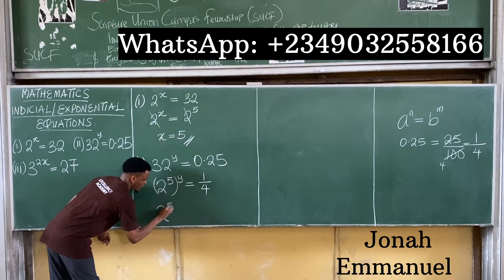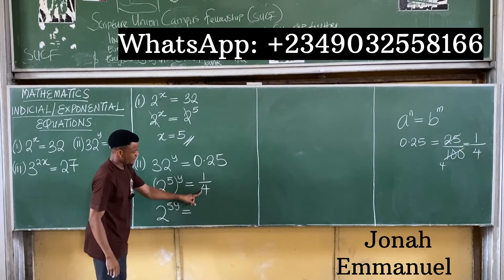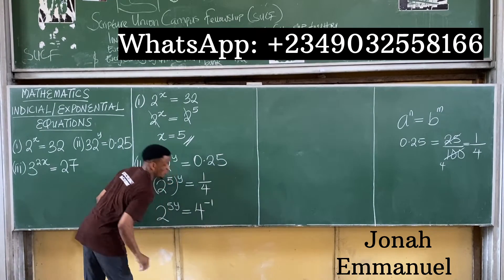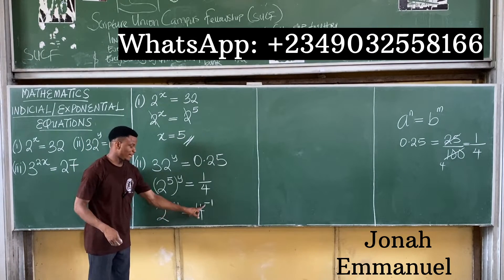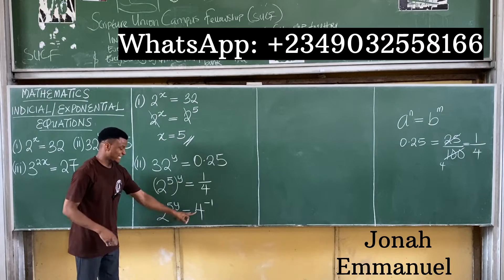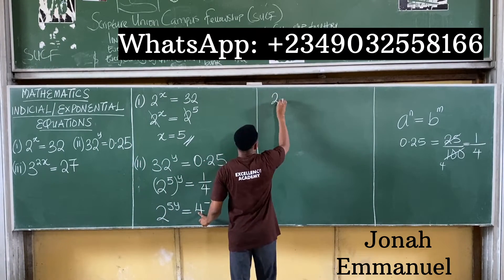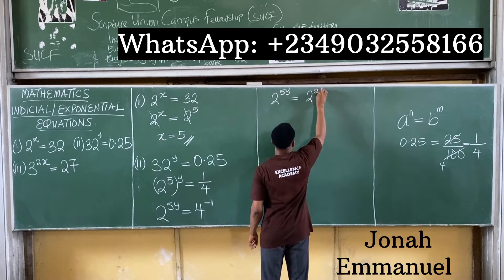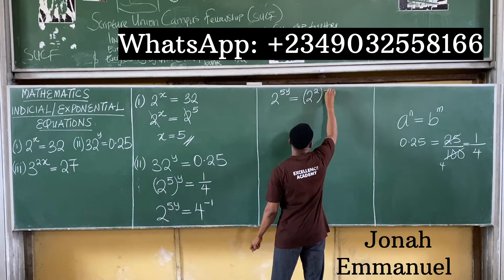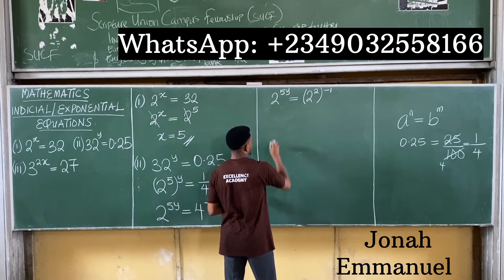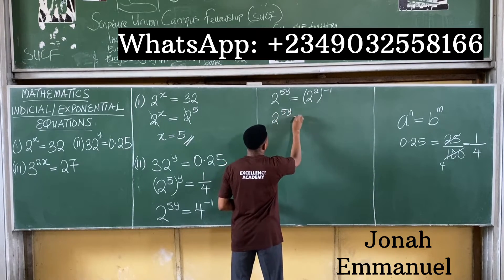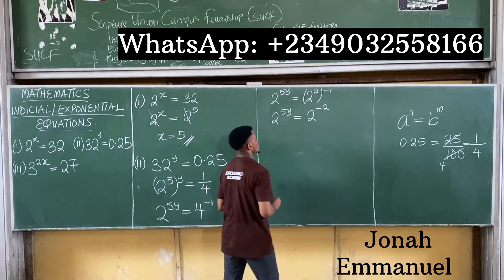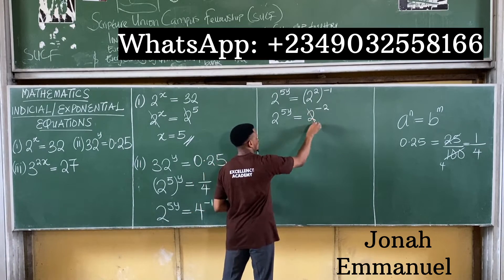1 over 4 becomes 4 to the power minus 1 using the negative index law, because 4 to the power minus 1 gives you 1 over 4. Express this in terms of base 2: I'm having 2 to the power 5y is equal to 4, which becomes 2 to the power 2, into minus 1. This becomes 2 to the power 5y is equal to 2 to the power of 2 times minus 1, which is minus 2. So in this case, 2 cancels 2.